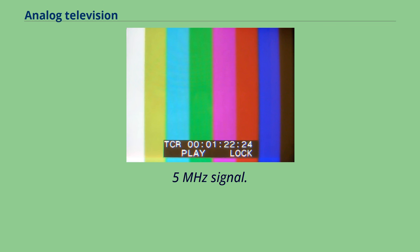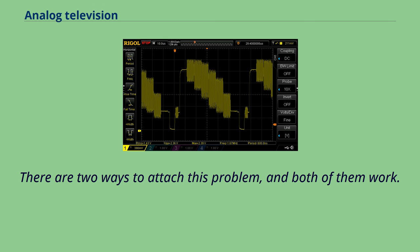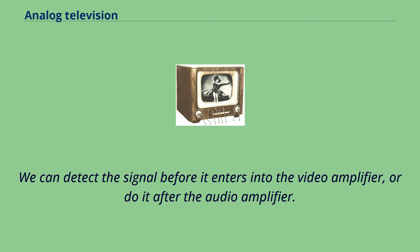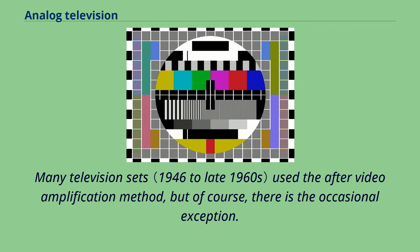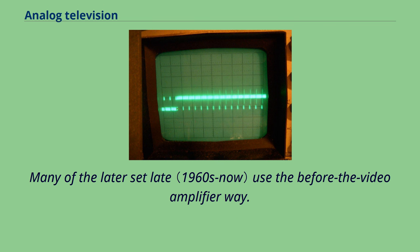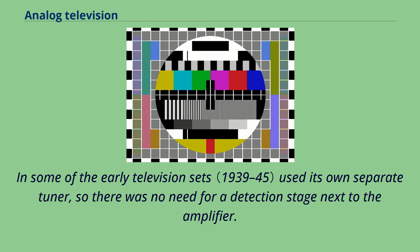The means of detection of the audio signal is by a 4.5 MHz trap coil/transformer. After that, it then goes to a 4.5 MHz amplifier. This amplifier prepares the signal for the 4.5 MHz detector. In television, there are two ways of detecting FM signals. One way is by the ratio detector. The next is a relatively simple detector, the quadrature detector.